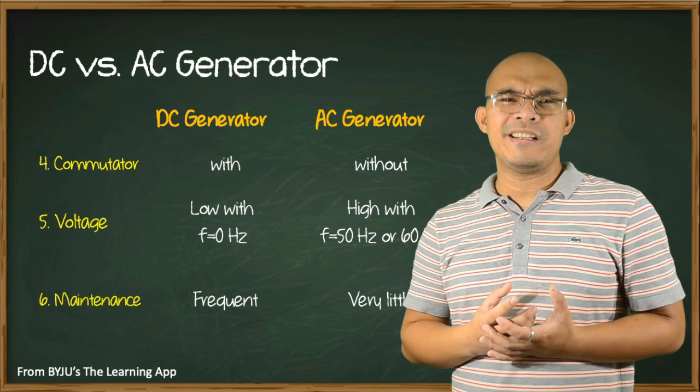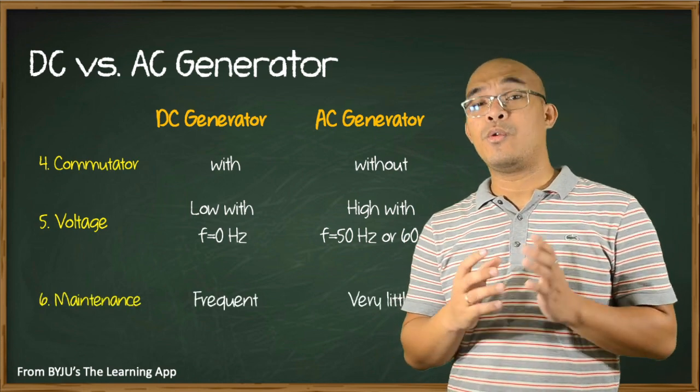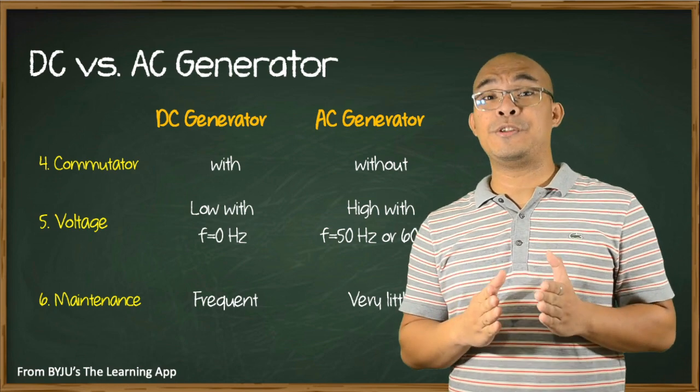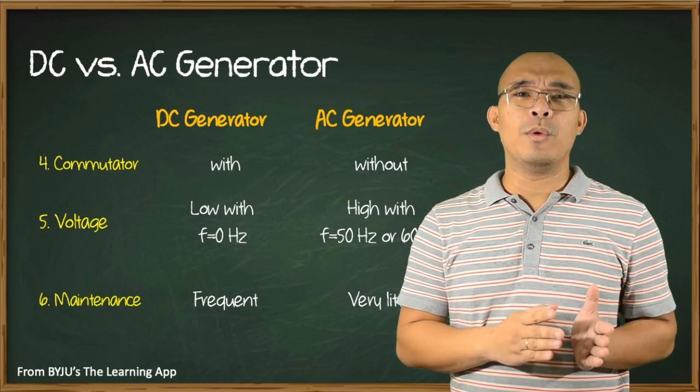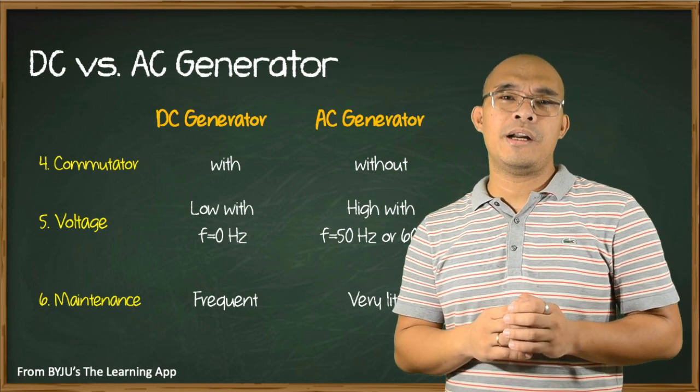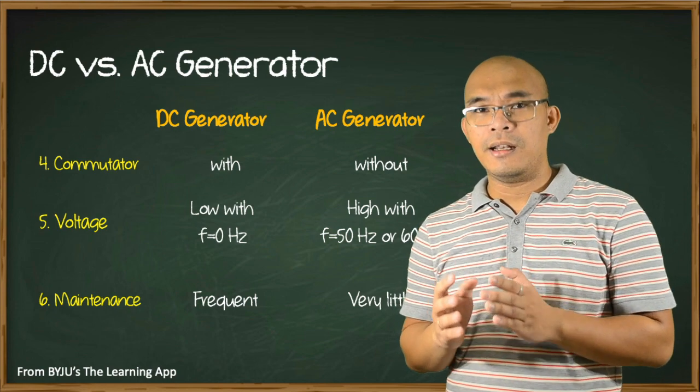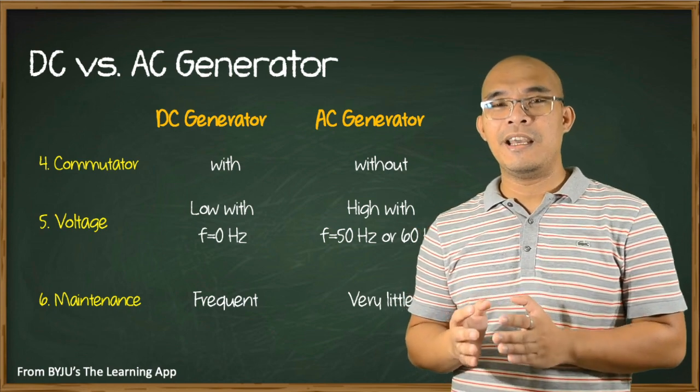When considering maintenance, DC generators require frequent maintenance and are less reliable, while AC generators require very little maintenance and are highly reliable.